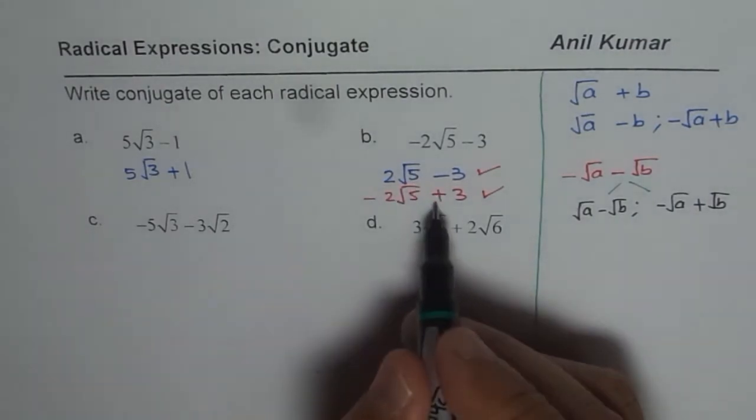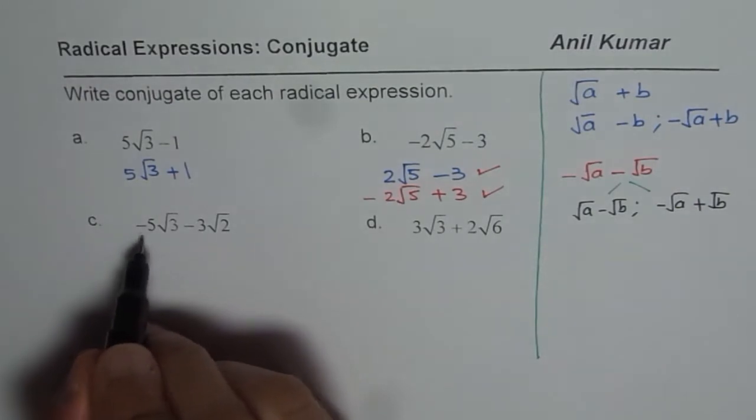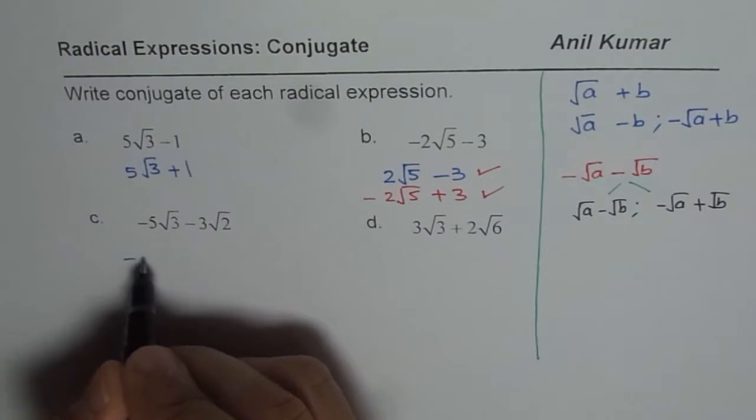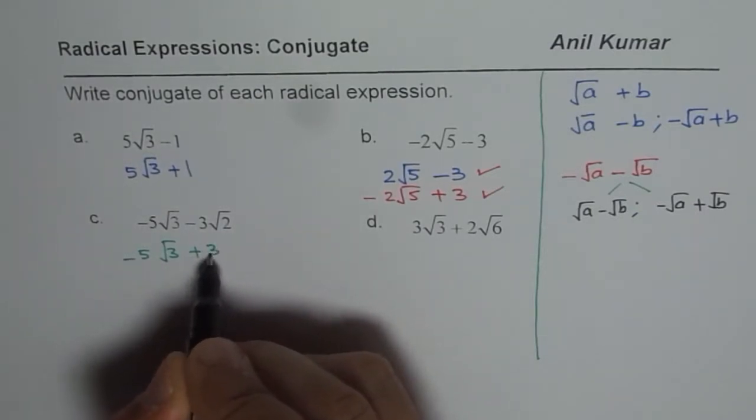But you have to change only one sign not both. That is important to understand. Similarly, here we will prefer to change any one sign. So we could write this as -5√3 + 3√2.